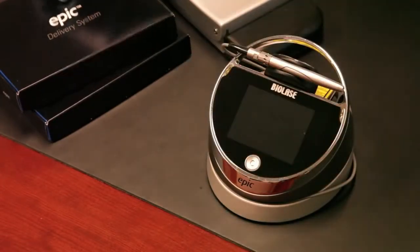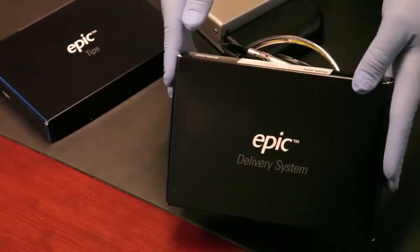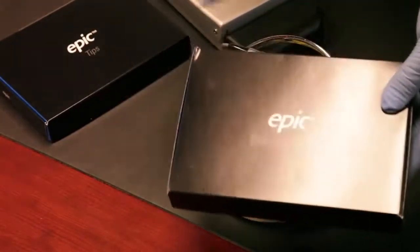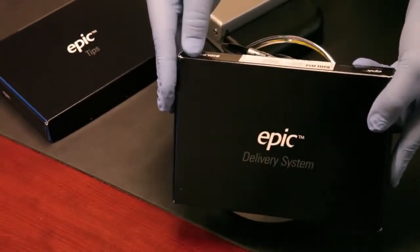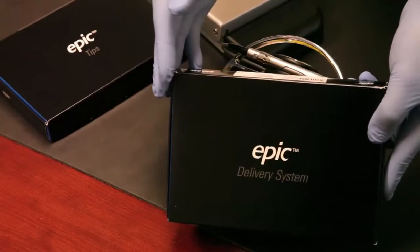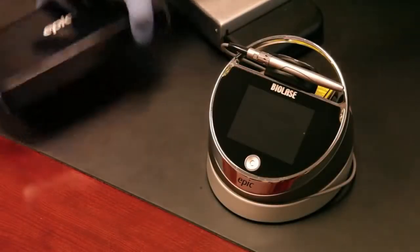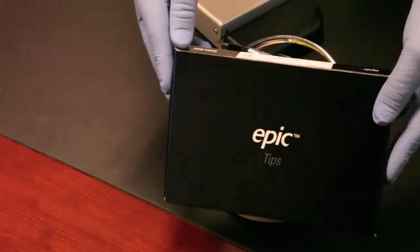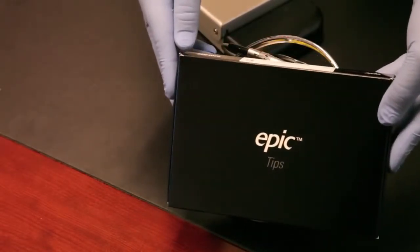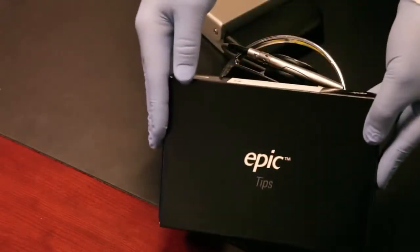The delivery system also comes in a package inside the Epic box. You'll open this up and actually install the delivery system when you get the laser in your office. Very easy to do with good step-by-step instructions. The system also ships with a box of 30 disposable single-use tips that you'll apply to the surgical handpiece.